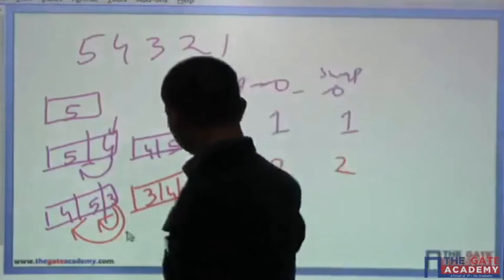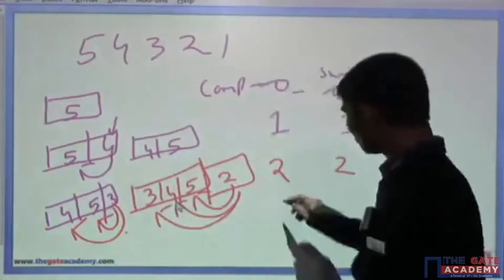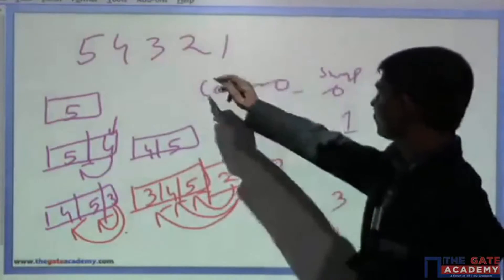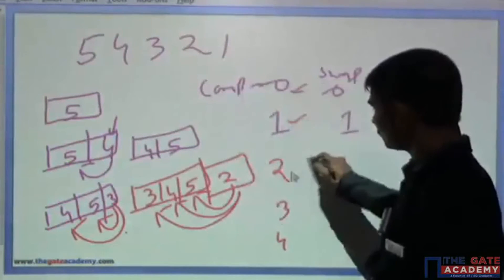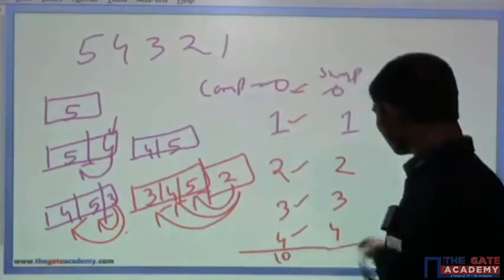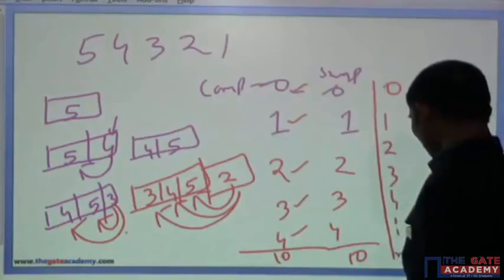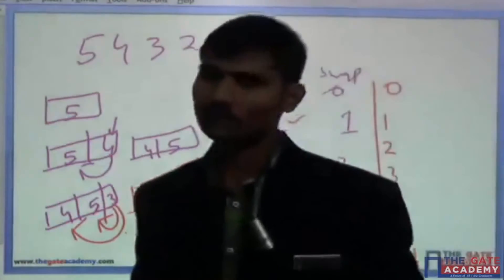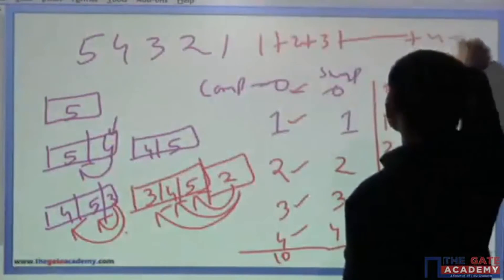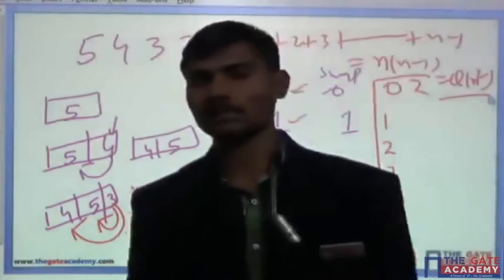Similarly, when element 2 comes, it makes three comparisons and three swaps, and the next will make four comparisons and four swaps. So for 5 elements, the total is 0+1+2+3+4 comparisons. Adding them: 4+3=7, +2=9, +1=10 comparisons — same as the sum of first n-1 natural numbers, which is n(n-1)/2, giving θ(n²).